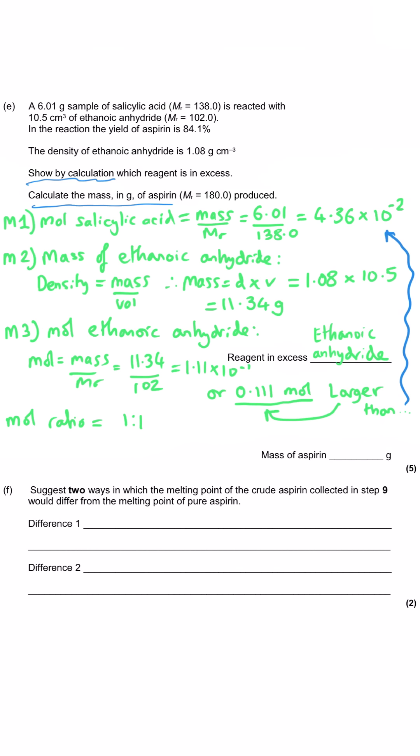So from here on in, now we've declared what's in excess, we need to use the limiting factor moles to work out the moles of aspirin that we would produce. So actually, for this fifth mark, we've got quite a bit to do. What we have to do is work out the mass of aspirin by taking our moles of salicylic acid, multiplying it by the MR of aspirin. And that would be if we got a 100% yield, because it's a one-to-one mole ratio, remember? That's why we use the moles of salicylic acid. And then since it's an 84.1% yield, we need to multiply that mass by 0.841, or 84.1 over 100, however you like to express that as a percentage.